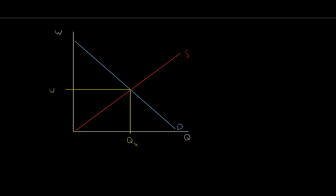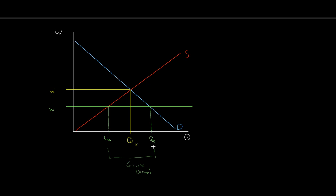If wages were held too low, our quantity supplied would be low but the demand from firms would be high. We would have excess demand for labor. The firm, in order to attract talent and be able to get more workers to produce more stuff, would have to push up the price. As they offer higher salaries, workers accept, and we make our way up to equilibrium. Quantity demanded would fall, quantity supplied would rise. Very similarly, the opposite would also be true if we had a really high price of labor.